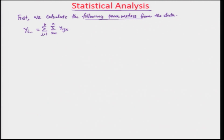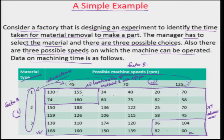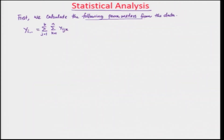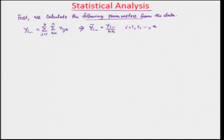So for all values of j equal to 1 to n and k equal to 1 to n, we sum the values — j and k will vary while i remains the same. This gives us y_ij.. From here we can calculate y_i.. bar, the average, which equals y_i.. divided by b times n, for i equals 1, 2, all the way to a.